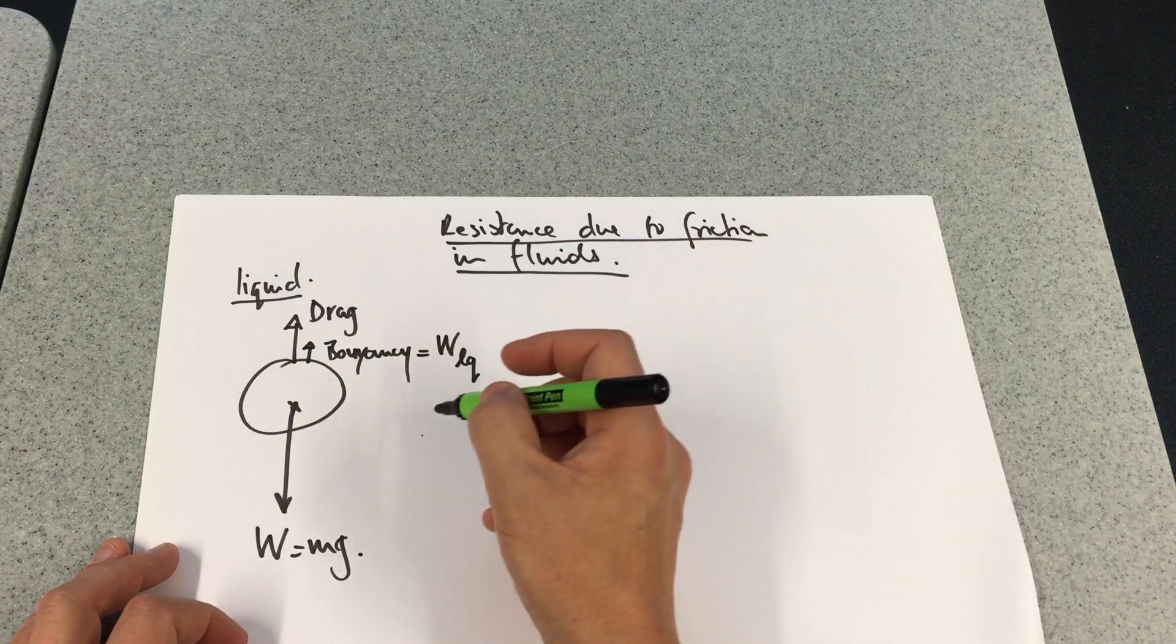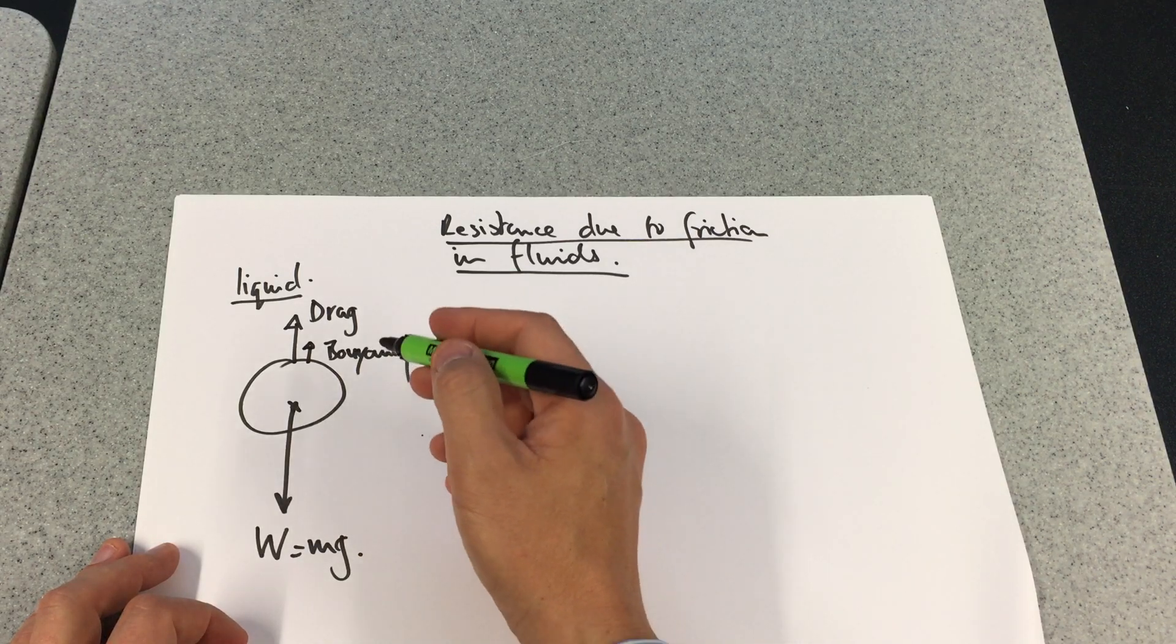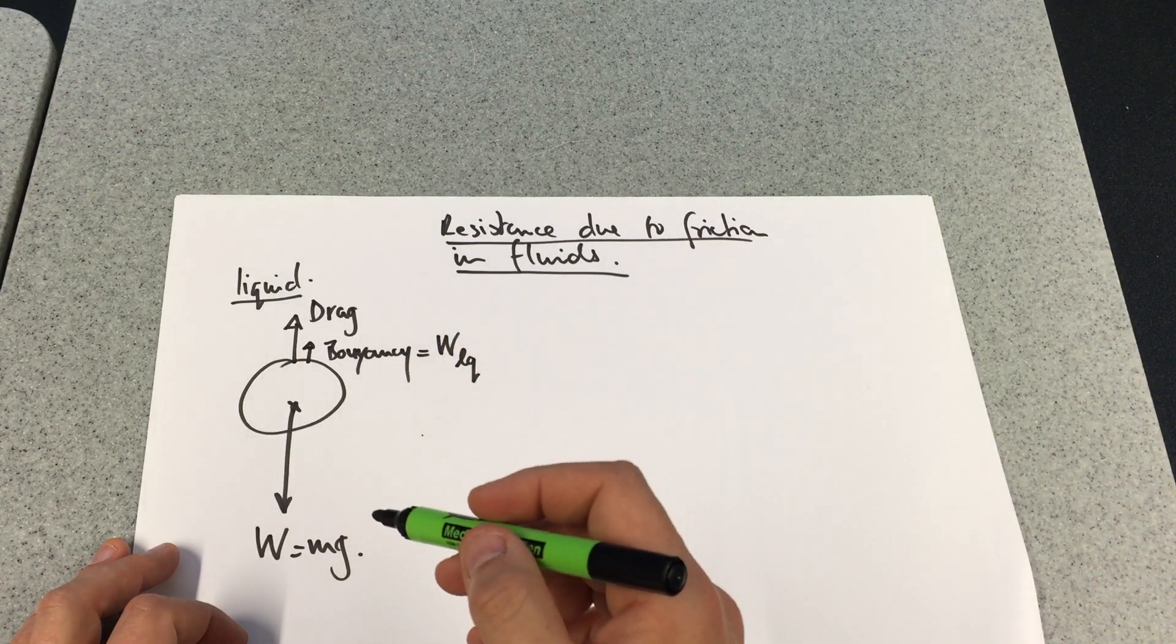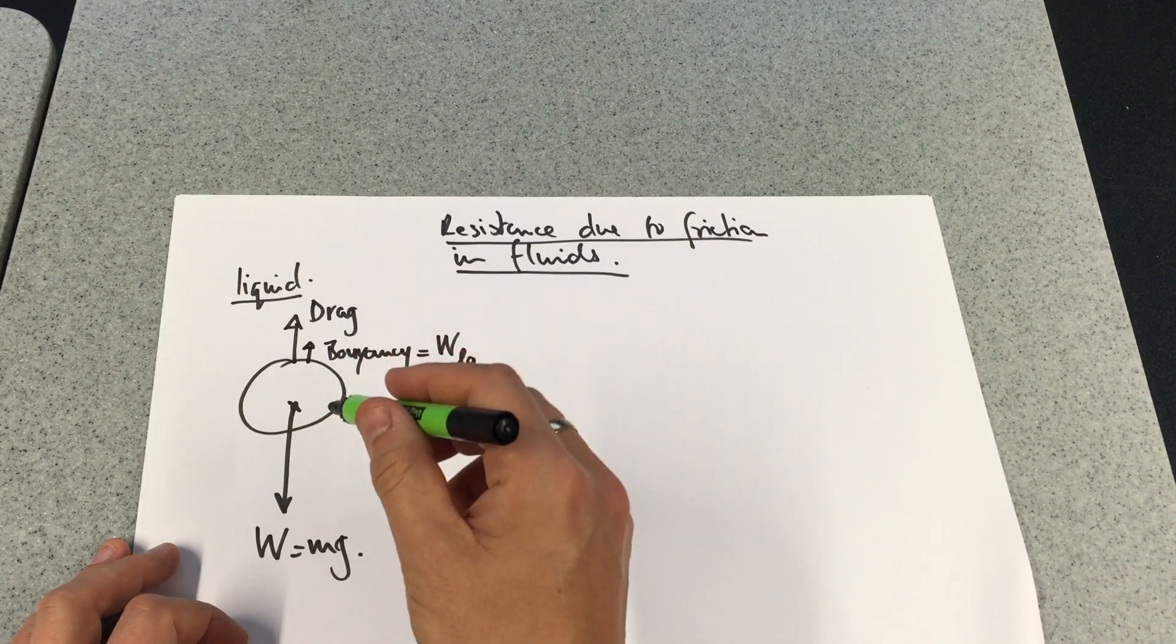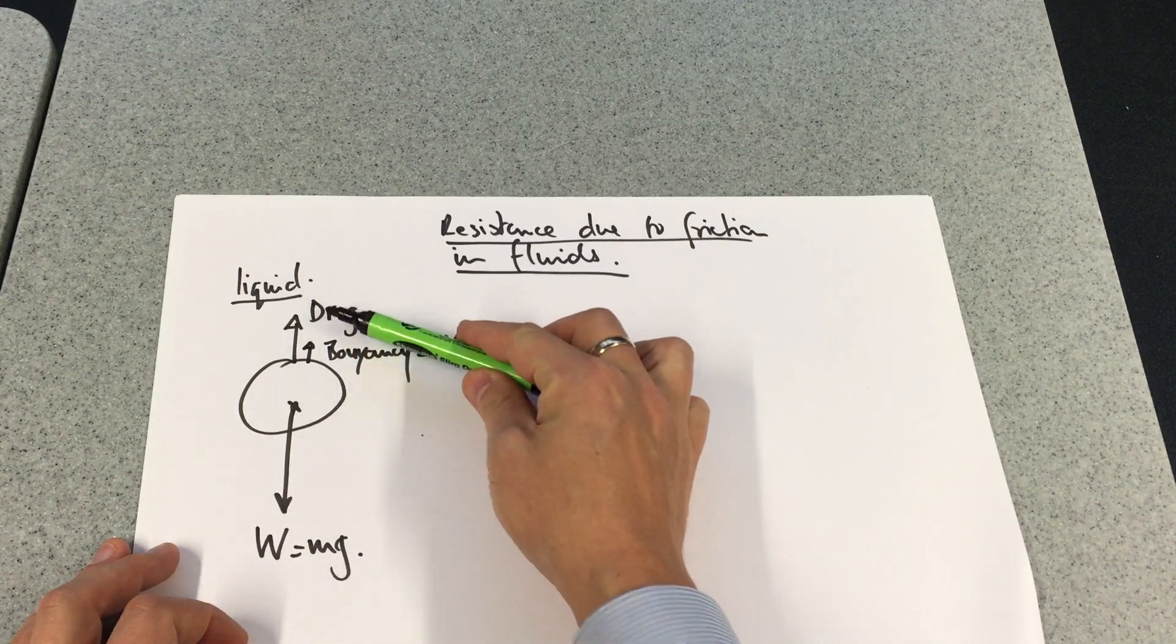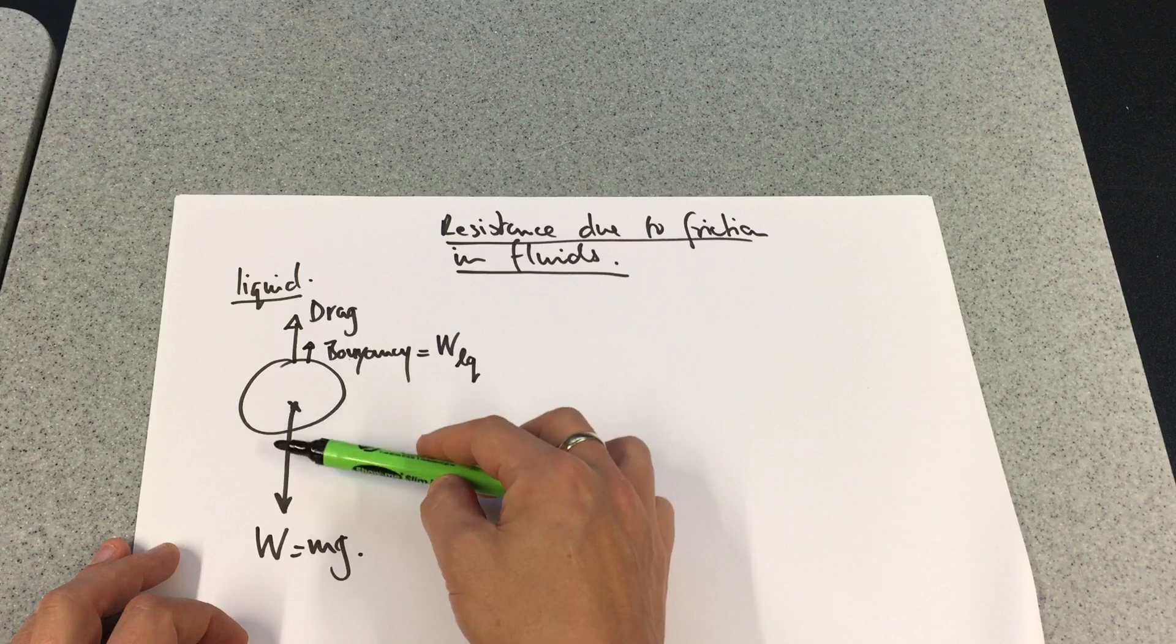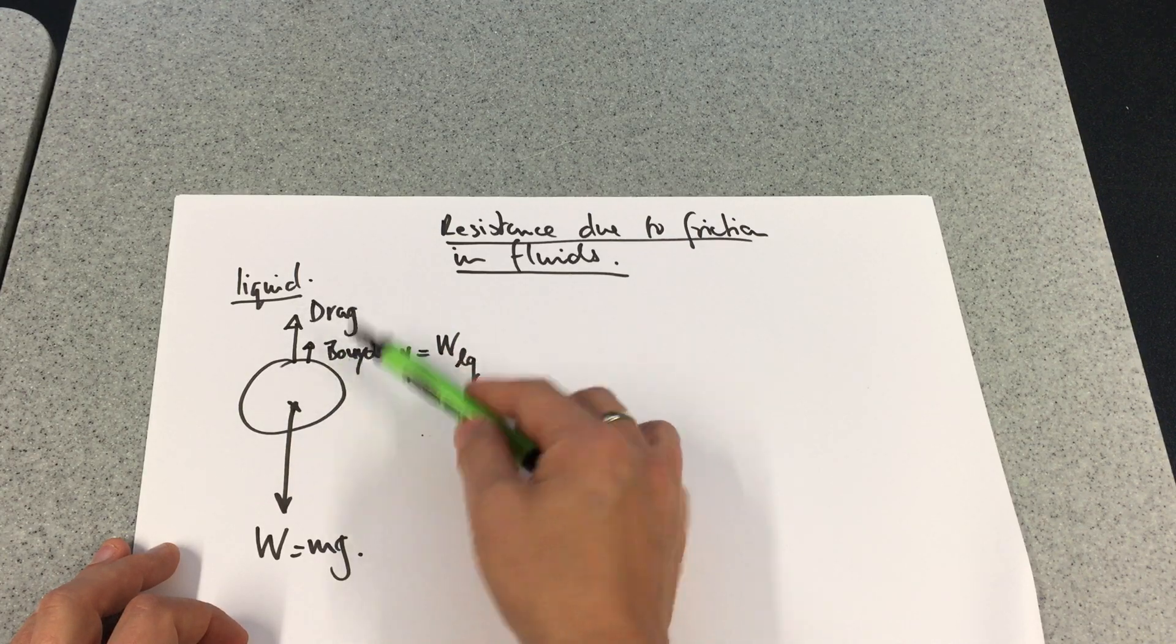Now we're looking at what happens when this reaches a terminal velocity. At terminal velocity we know that these three forces are balanced.